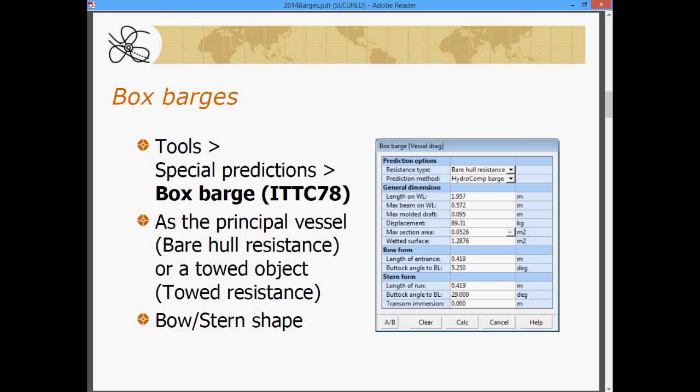If, on the other hand, you had a box barge that you were towing at some distance behind the tugboat, and you were looking for the cumulative resistance and thrust requirements of that system, you would set up the tugboat or the tug as the principal vessel in NAVCAD, and then apply the barge as a towed resistance in addition to that.